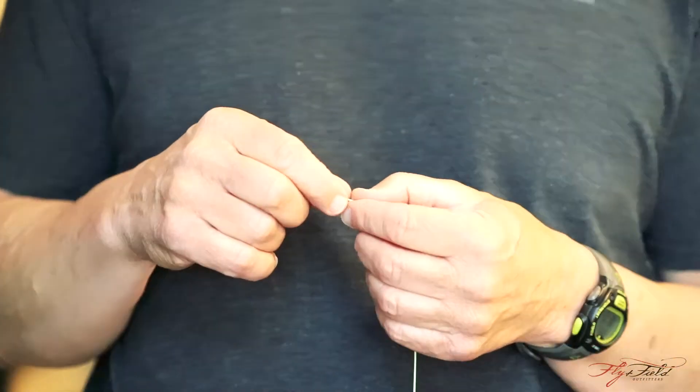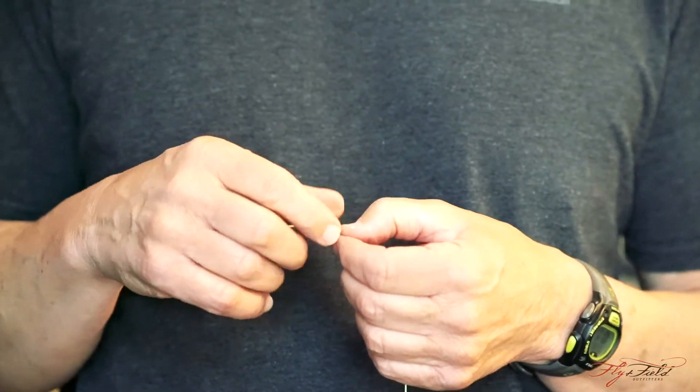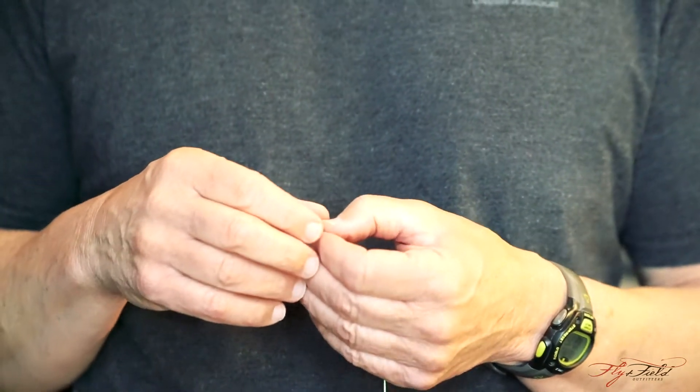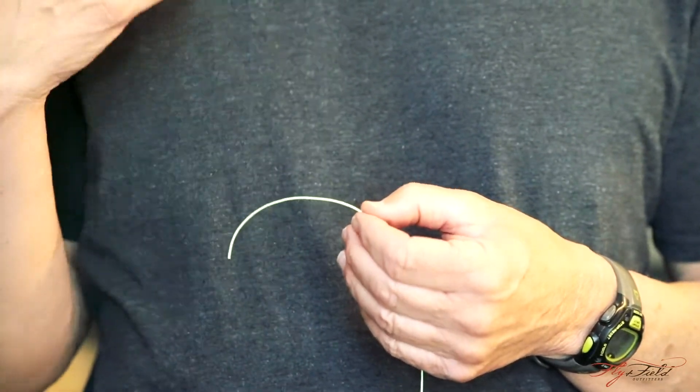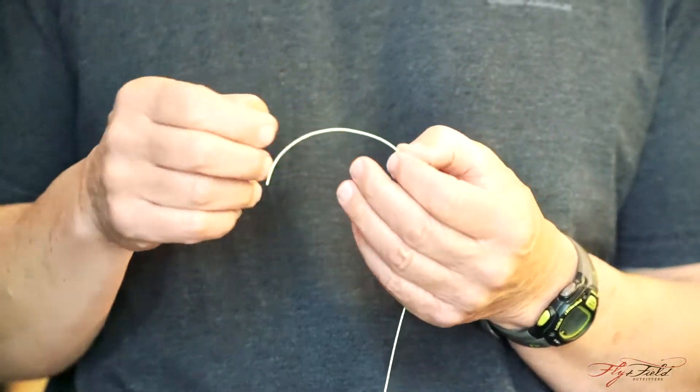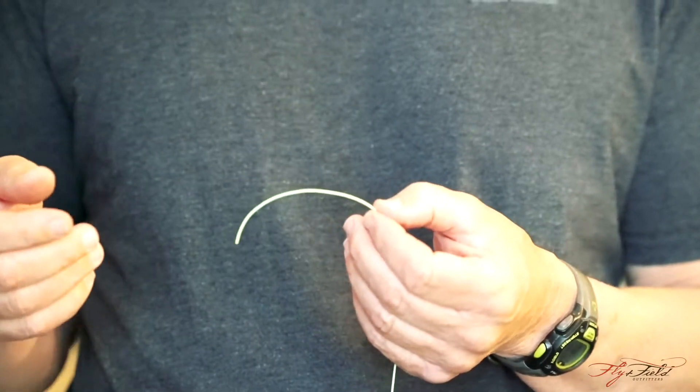More and more we find ourselves using two fly setups, a dry dropper or maybe two or sometimes even three nymphs. Where it can be particularly frustrating is when you're dealing with smaller flies, trying to tie that clinch knot onto the bend of that first fly.